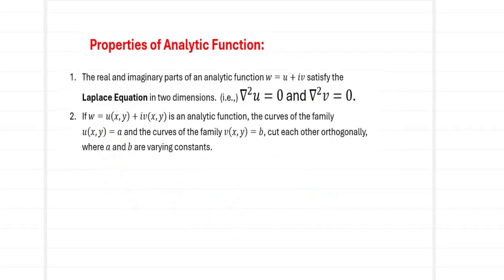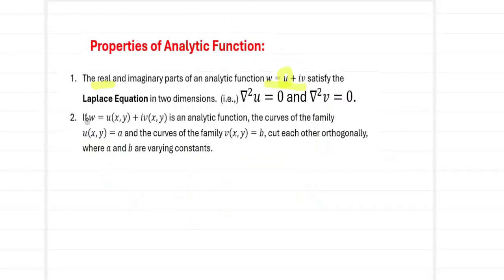Now we will move on to the properties of an analytic function. The real and imaginary parts of an analytic function w = u + iv satisfy the Laplace equation in two dimensions. The real part u satisfies ∇²u = 0, and the imaginary part v also satisfies the Laplace equation, so ∇²v = 0. This is the first property. The second property says that if w = u(x,y) + iv(x,y) is analytic, the curves u(x,y) = a and v(x,y) = b cut each other orthogonally.